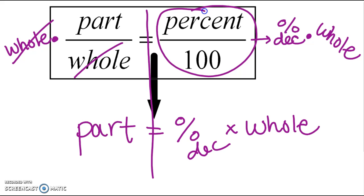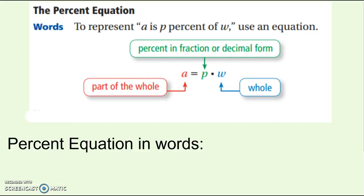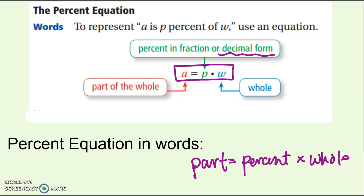If I rewrite it, I get the part is equal to the percent written as a decimal multiplied by the whole. That's just showing you how we get it, but here is a better way to write it down. In symbols, you're going to write this: A equals P times W. A is the part, just like before. P is the percent, but now it's written as a decimal. And W is still the whole. Or in words, the part equals the percent times the whole. But you have to remember that that percent is written as a decimal now.